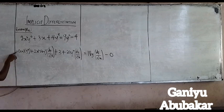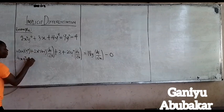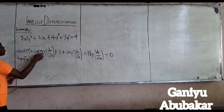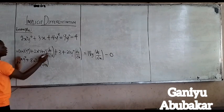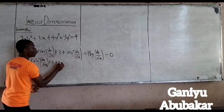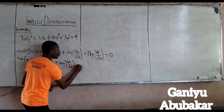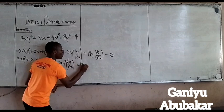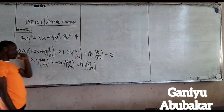Let me do some simplification. 2 times 2 is 4, attaching X and Y gives 4XY to power 4. Then 2 times 4 is 8, so I have 8X squared Y to power 3 with dy/dx. Next I have the constant 3. Next I have 20Y to power 4 with dy/dx. It is now equal to 18Y into dy/dx, and the constant zero drops off.